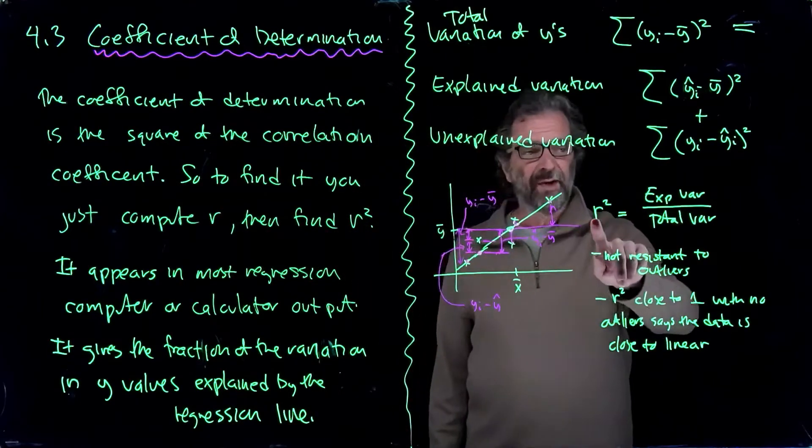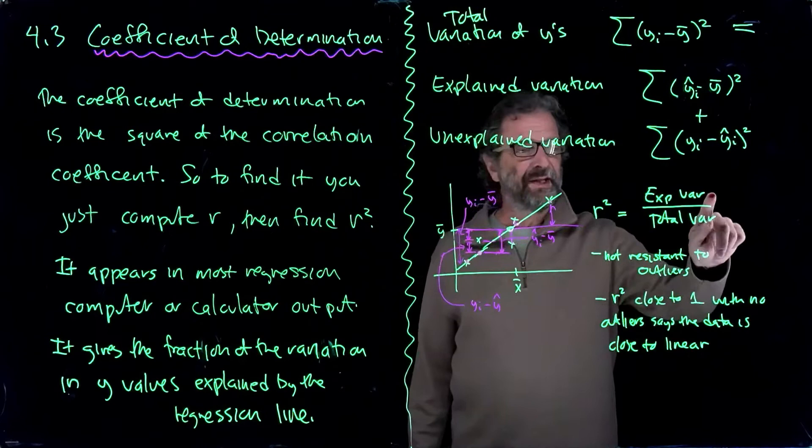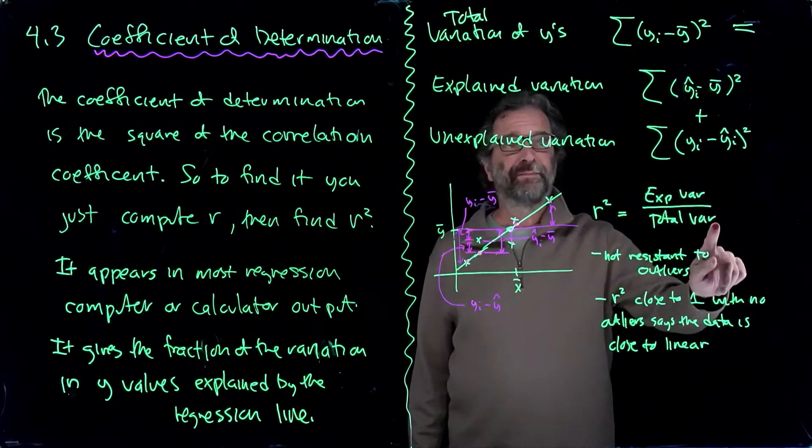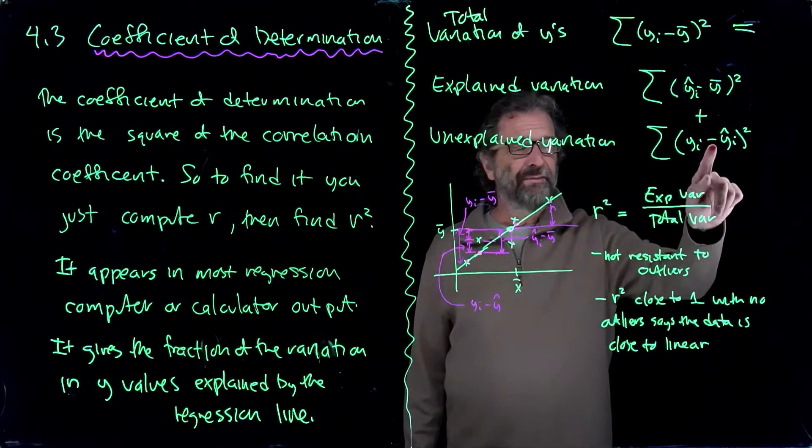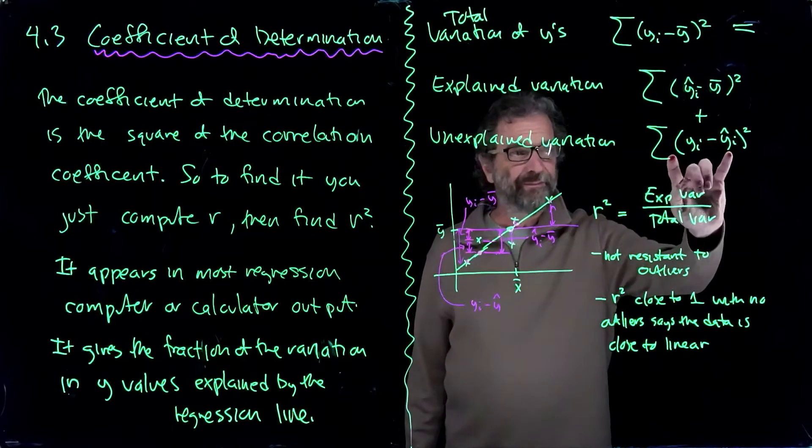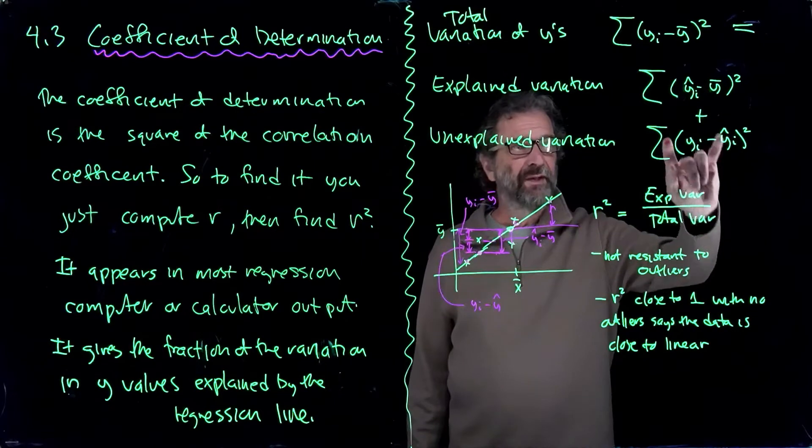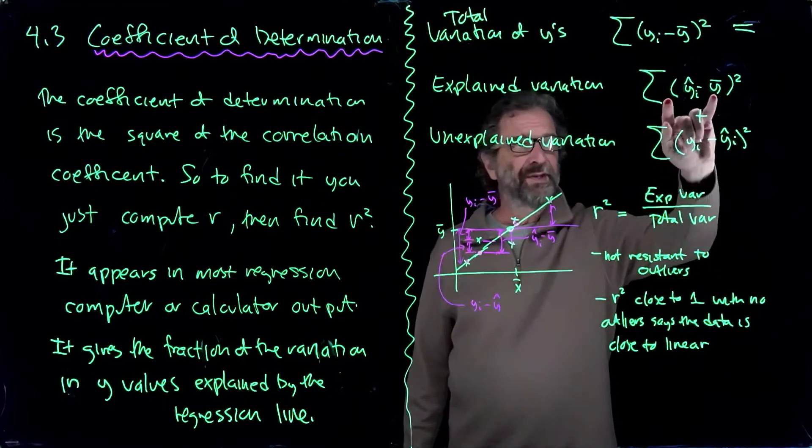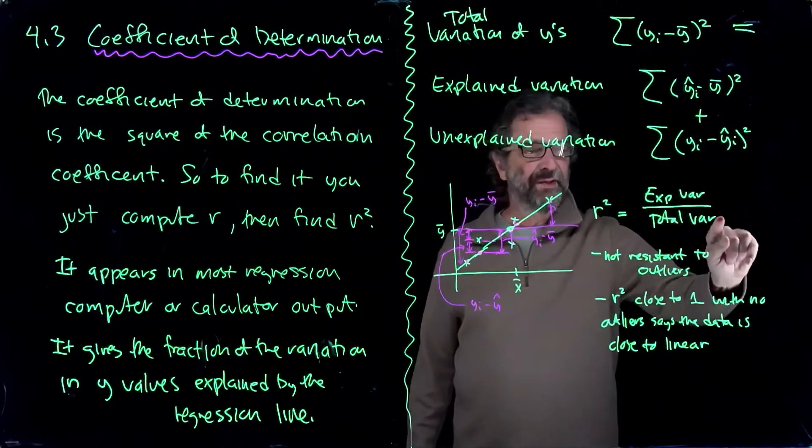Then we go over here, it says that when we're computing R squared, it turns out we're taking the fraction, the explained variation over the total variation. So if the residual squared values is small, which the regression line is trying to do, this plus that equals that. So this will be just about the same as that, and this fraction will get closer and closer to one.